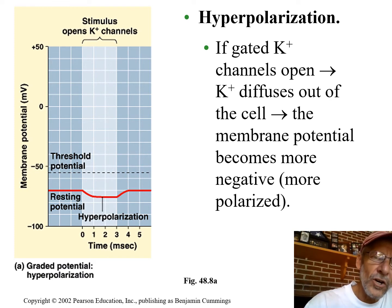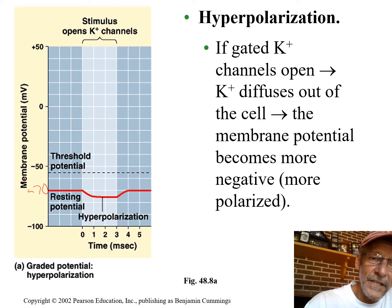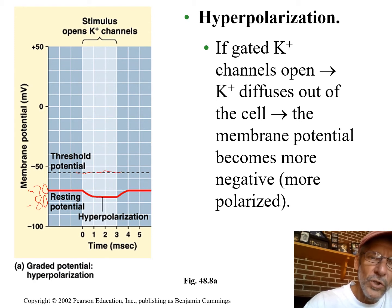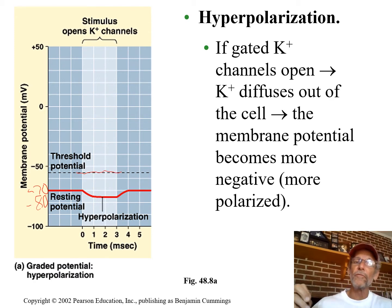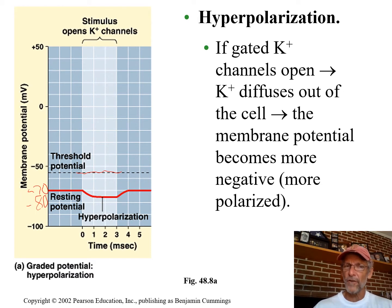Anything that causes the difference to be more than negative 70 — say, negative 80 — means we're further away from the threshold. We're further away from this nerve firing, because the threshold where it fires is negative 55. Keep those thoughts in mind.